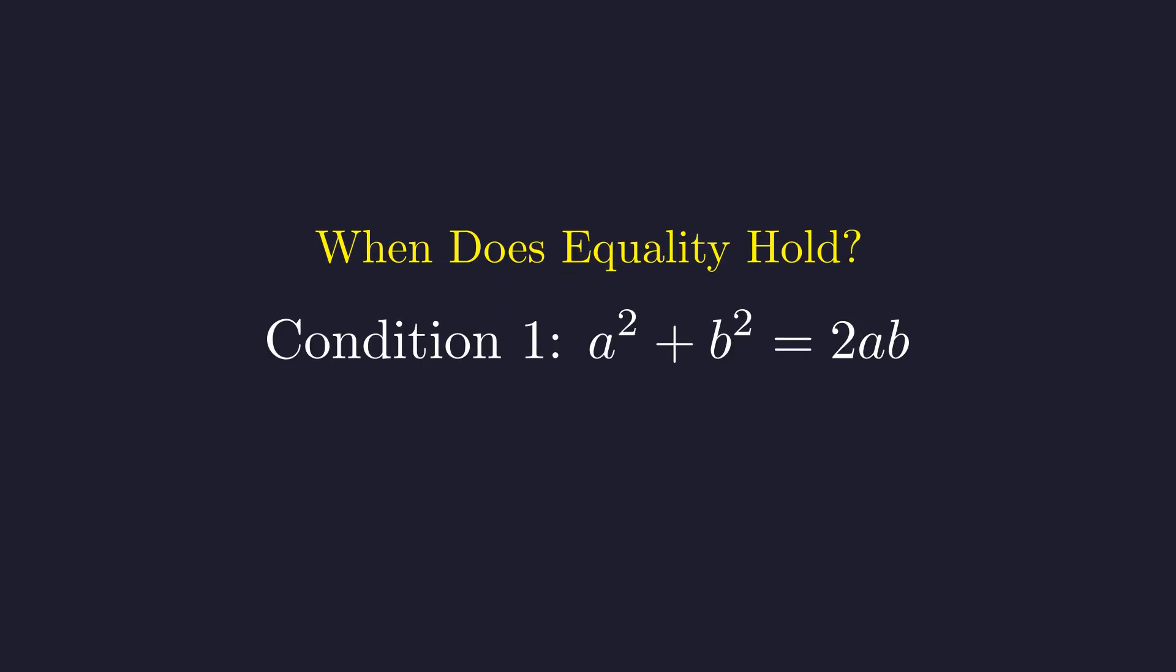Our first condition comes from the AM-GM inequality. We need A squared plus B squared to equal exactly 2AB. Let's rearrange this by moving the 2AB term to the left side.